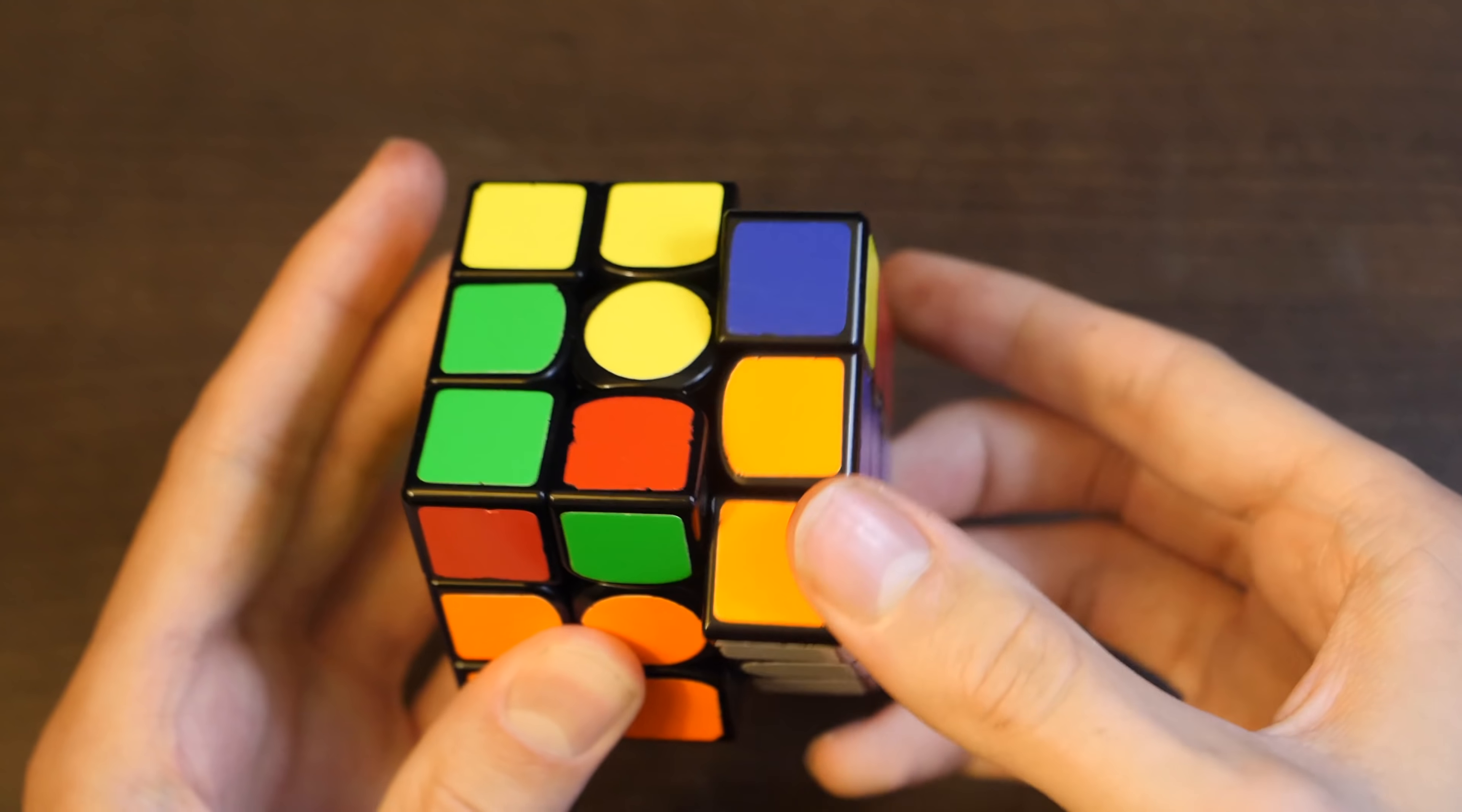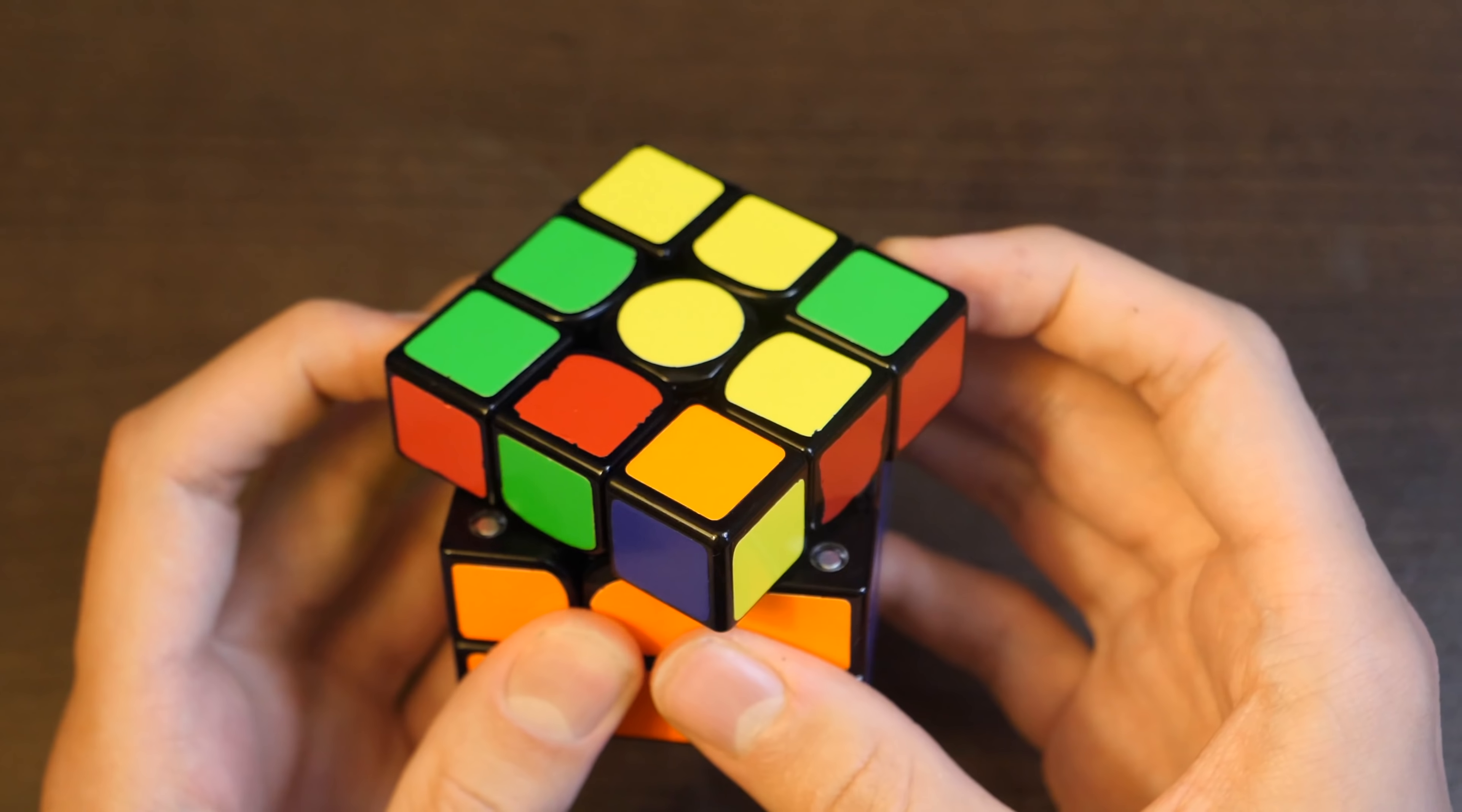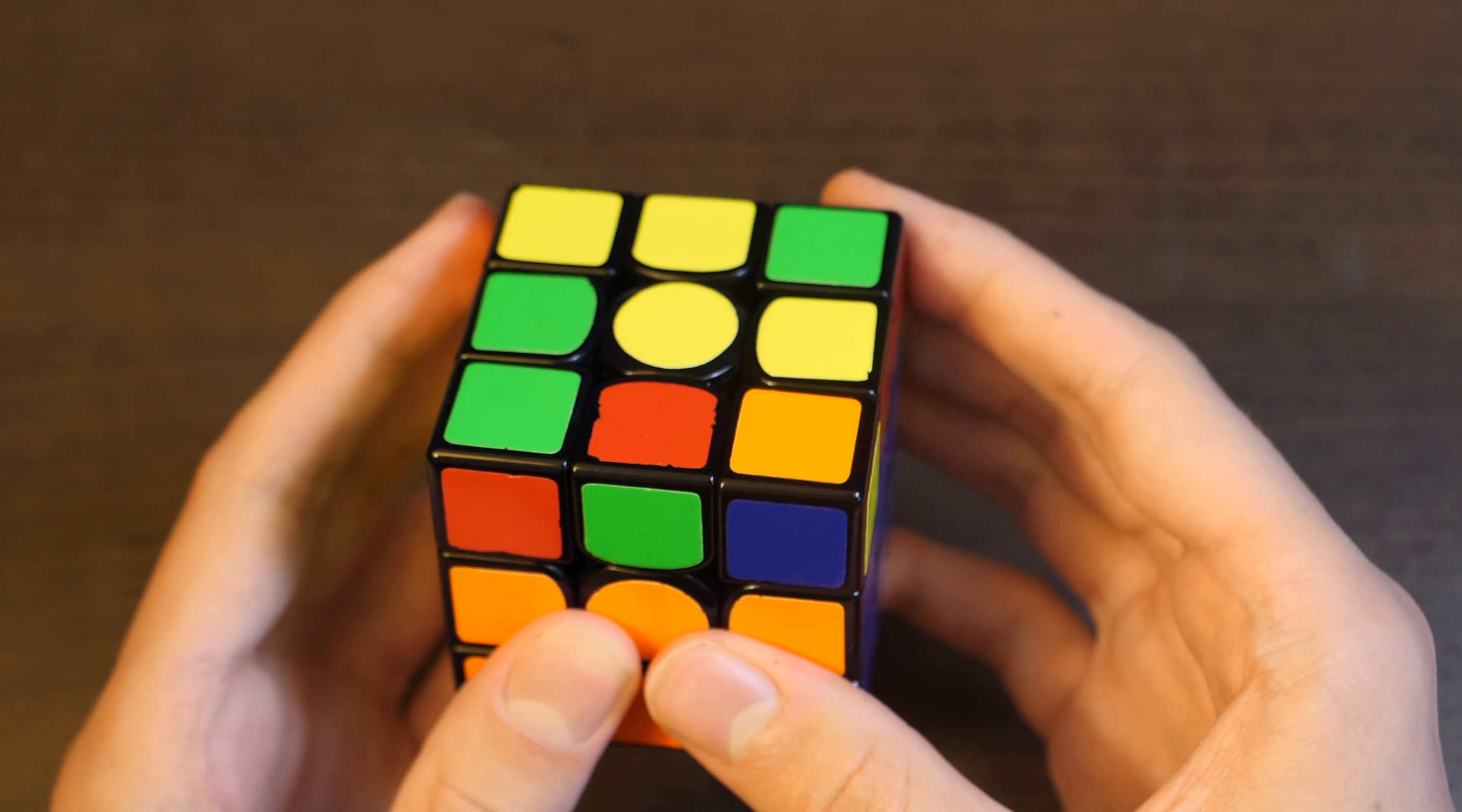He sees this corner and he sees that none of these edges go with that corner, so it must be back here because that's the only edge he can't see. So he solves these like this.